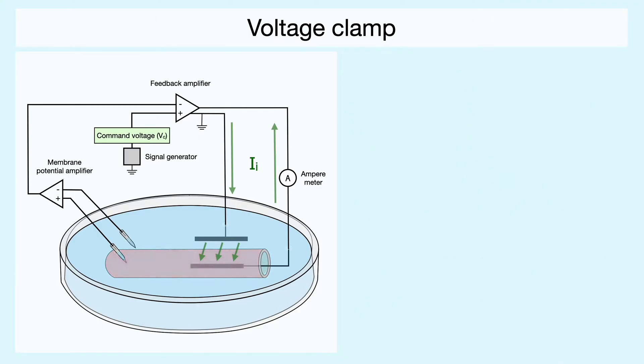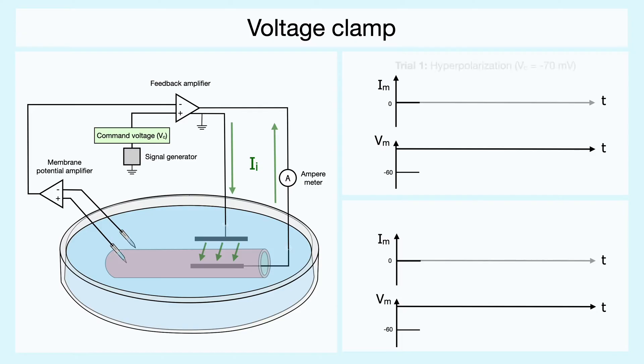For the two first examples, let's plot the membrane potential and the membrane current as a function of time. On the plot of the membrane potential, let's assume that the resting membrane potential is at negative 60 millivolts. While we haven't touched the command voltage yet, the membrane is at rest so there is no recorded current.